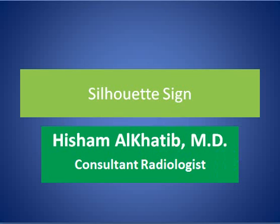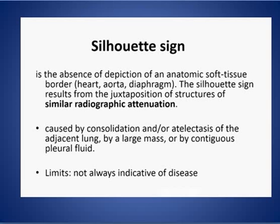My topic today is about the silhouette sign, which is one of the most useful signs in evaluating the chest X-ray. The silhouette sign is the absence of depiction of an anatomic soft tissue border — either the heart, aorta, or diaphragm — which has the same attenuation, same density, and will obscure that border. It is caused by consolidation, atelectasis, or a mass lesion adjacent to the heart, aorta, or diaphragm.